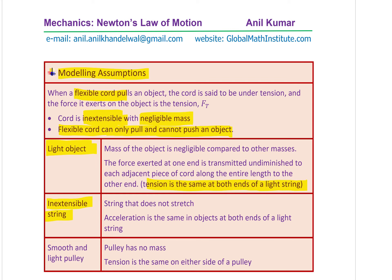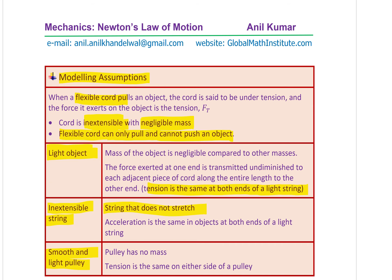An inextensible string means the string does not stretch. Acceleration is the same for objects at both ends of the light string. When we say a smooth and light pulley, it means the pulley has no mass and the tension is the same on either side of the pulley. Getting back to our question: the string is inextensible with negligible mass, so the tension is the same on both sides, and the acceleration will also be the same on both sides.